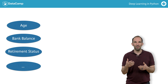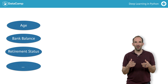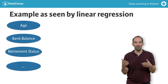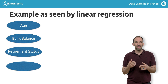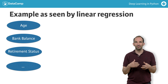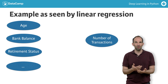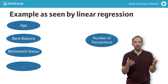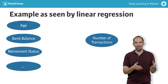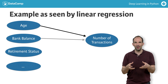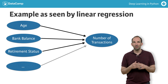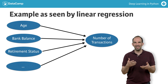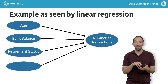We'll get to deep learning in a moment, but for comparison, consider how a simple linear regression model works for this problem. The linear regression embeds an assumption that the outcome — in this case how many transactions a user makes — is the sum of individual parts. It starts by saying: what is the average? Then it adds the effect of age, then the effect of bank balance, and so on. So the linear regression model isn't identifying the interactions between these parts and how they affect banking activity.